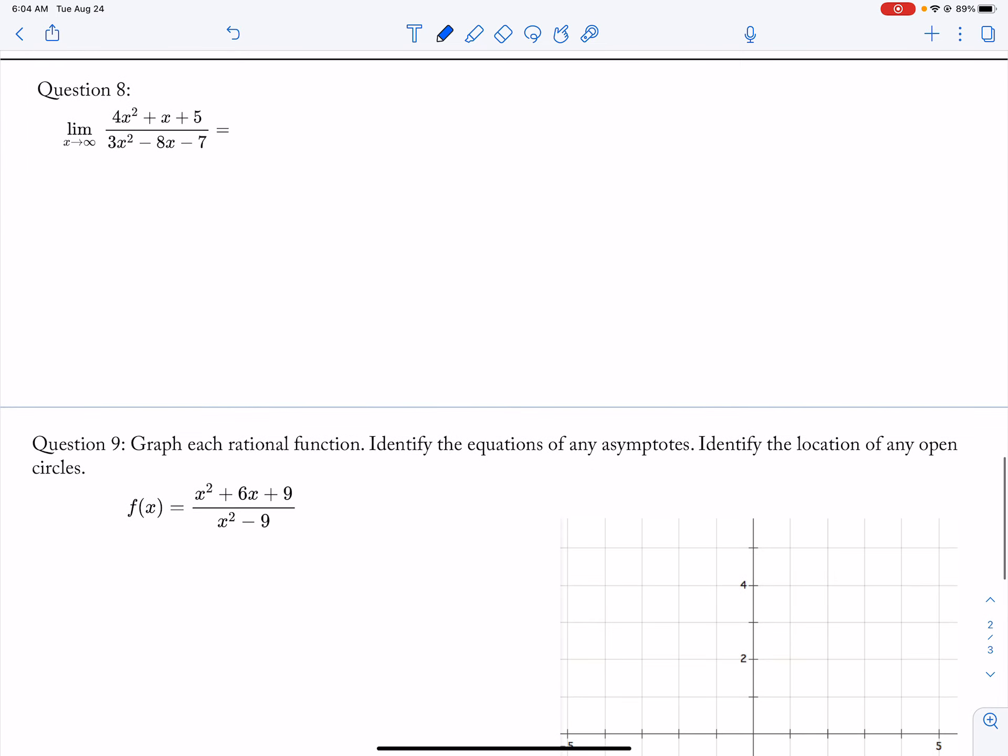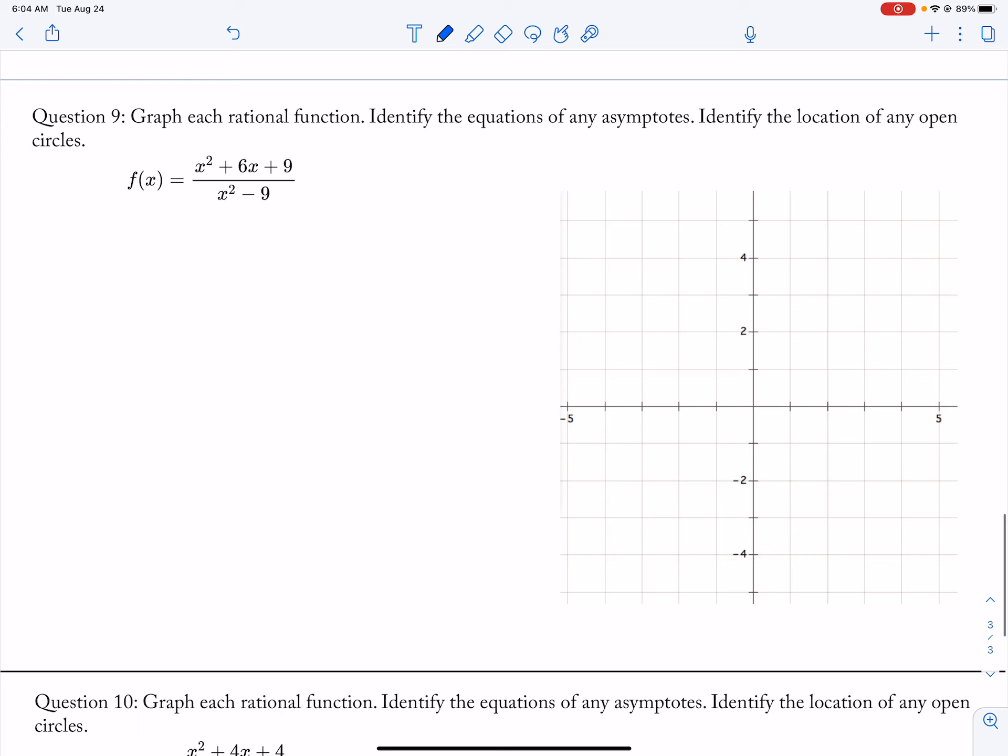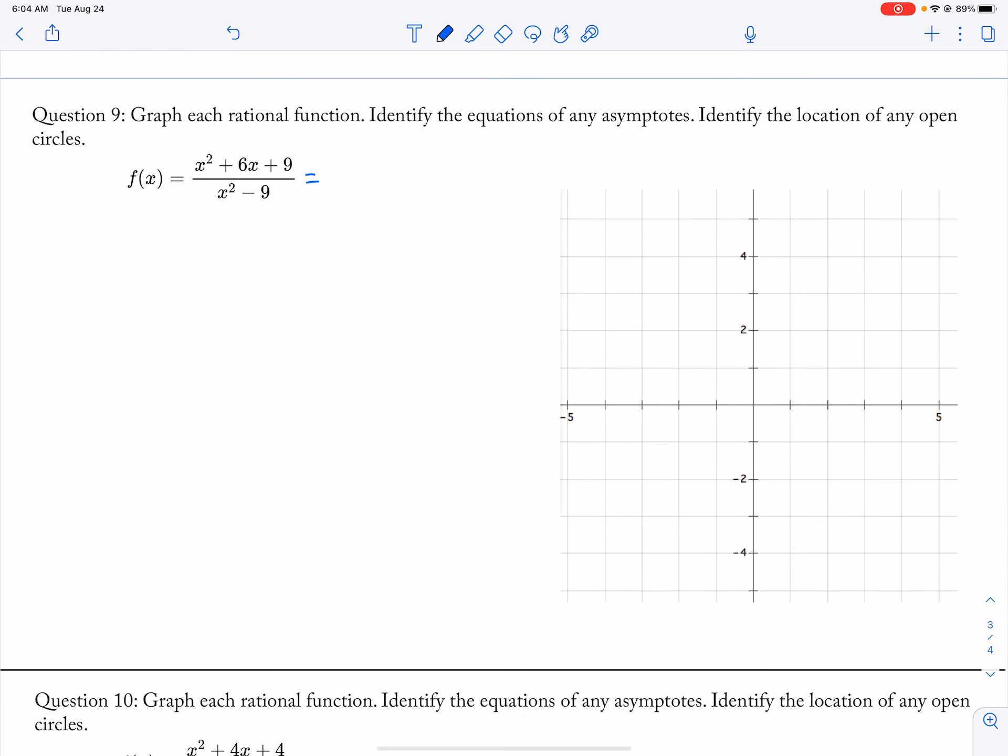Okay. And then what I wanted you guys to do is I wanted you guys to be able to graph. So here, we're going to factor x plus 3, x plus 3 over x plus 3, x minus 3. What am I canceling out is my x plus 3? So at negative 3 is the removable discontinuity.